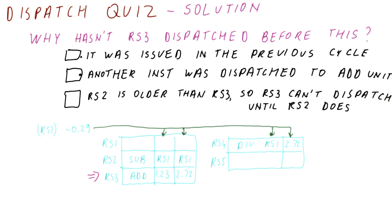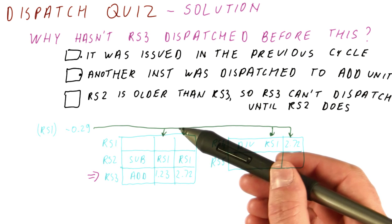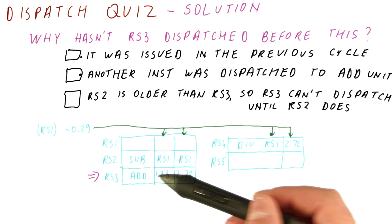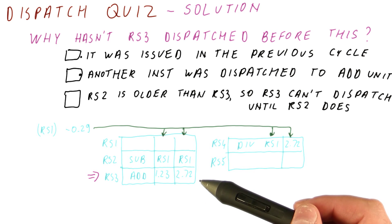We have our dispatch quiz. Let's look at the solution. If this instruction was indeed issued in the previous cycle, meaning it came into the reservation station, then depending on when we select instructions for execution, let's say we do it towards the end of the cycle,